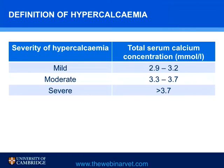In terms of hypercalcemia, we can divide it into mild, moderate, and severe. Mild hypercalcemia is around 2.9 to 3.2 millimoles per liter. Moderate hypercalcemia is 3.3 to 3.7, and that is the range where we should be working out the cause. In severe hypercalcemia, greater than 3.7, there will be damage to organs through dystrophic mineralization, which will further damage essential organs such as the kidney.